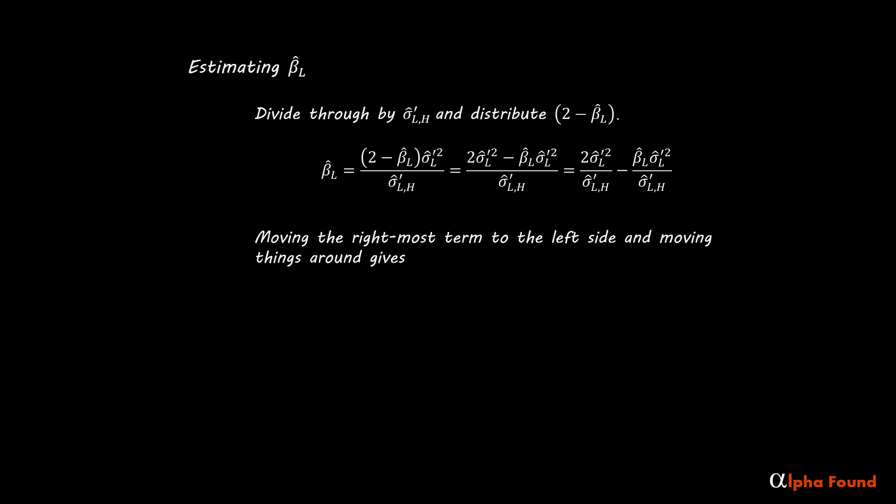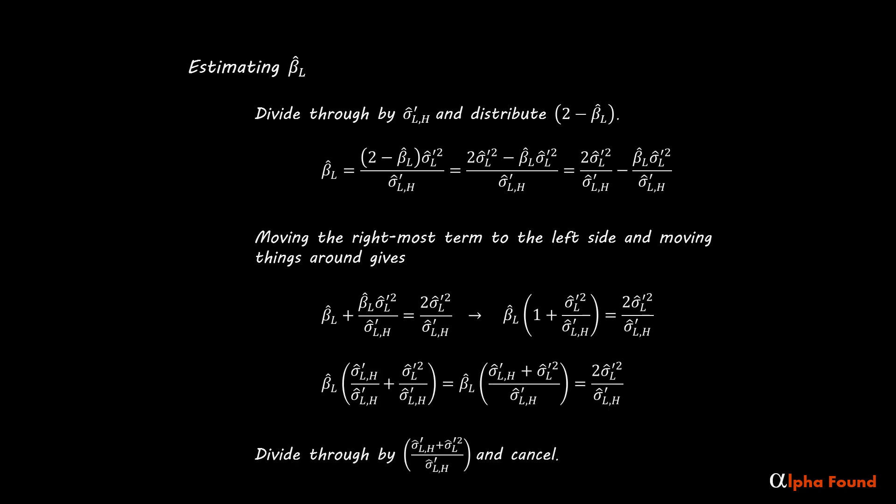Moving the rightmost term to the left side and moving things around gives the result. The high ideal beta minus the values divide through and cancel.